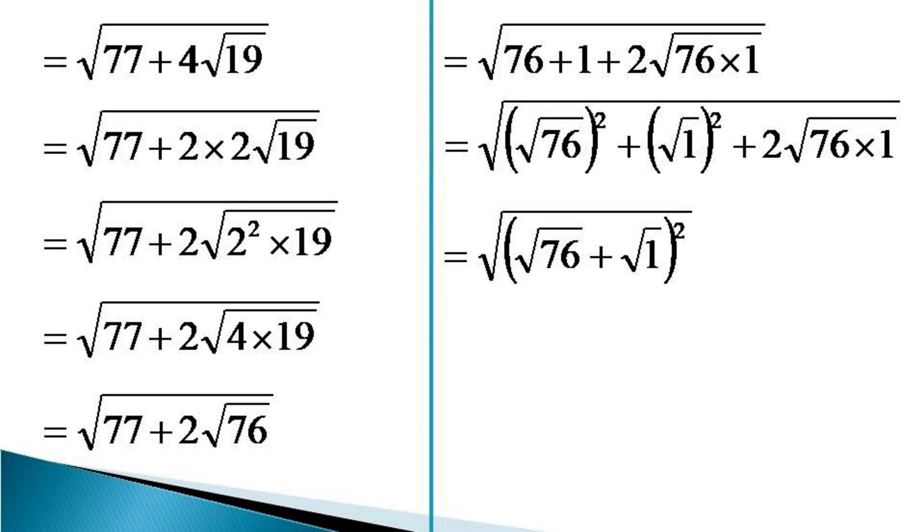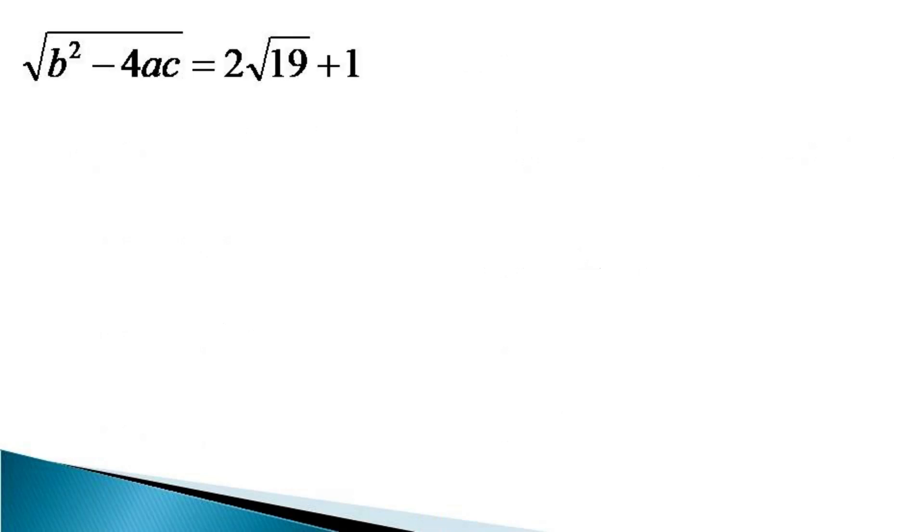The square term and the root cancel each other and the expression becomes equal to √76 + 1. √76 can be further simplified and the expression is given as equal to 2√19 + 1. So the value of the discriminant under root, √(b² - 4ac), comes equal to 2√19 + 1.